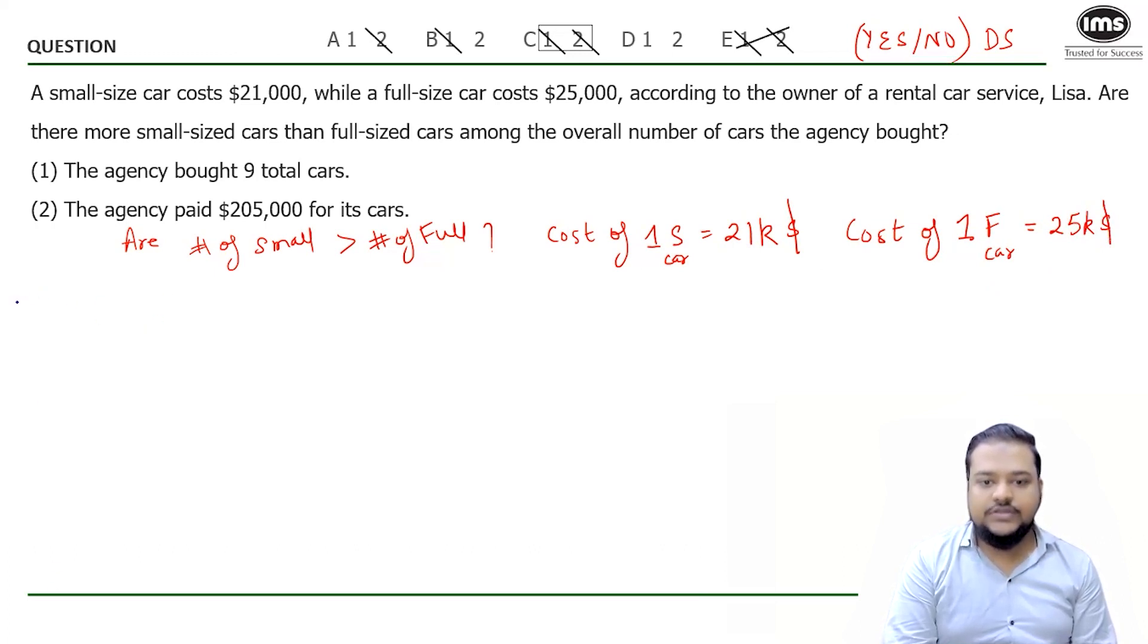Let's start with statement one. Statement one tells us the agency bought total nine cars. We can translate this statement like this: let's say number of small cars are X, number of full size cars are Y. So we can make an equation X plus Y equals 9. Now what can you say about X and Y? The sum of the cars is 9. There could be multiple possible values.